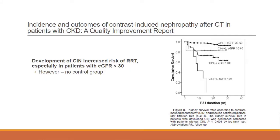In terms of renal survival — meaning the need to progress to dialysis — patients who were CIN-positive with an eGFR of less than 30 showed a dramatic drop in renal survival out to about 40 months. This was statistically significant compared to those with an eGFR of less than 30 who did not develop CIN. Whether this was caused by the CIN itself is unclear since there's no control group — these patients may simply have been at higher baseline risk. However, this is clear evidence of long-term outcome deficits in patients who develop CIN with an eGFR, especially less than 30.